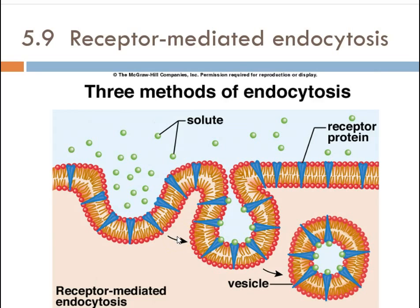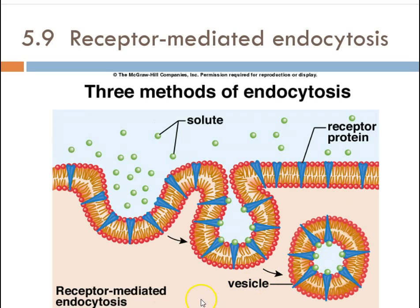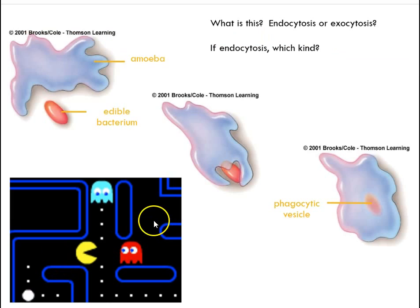The last one is receptor-mediated endocytosis. It's looking for something in the bloodstream or outside the cell that's at really low concentration — these solutes. It's going to bind to these receptors, and the only things that can bind to these receptors are these specific individual molecules. It'll bring them inside the cell and then release them inside. Usually these kinds of things go right to the genetic level to do something. We found something on the outside, we engulf it and bring it in — it's a way to keep us and our cells safe.